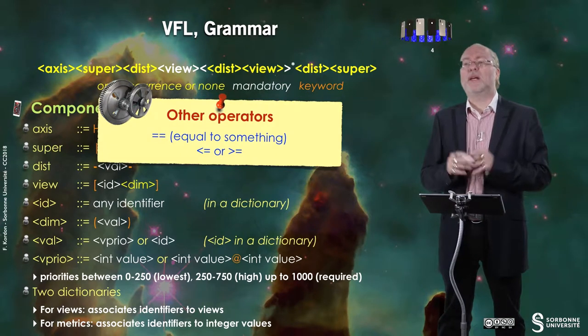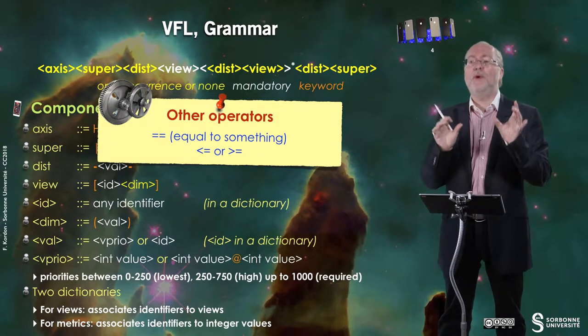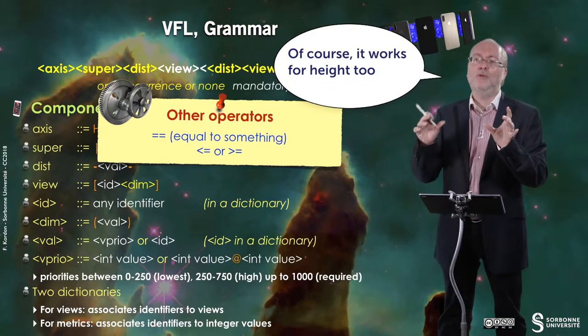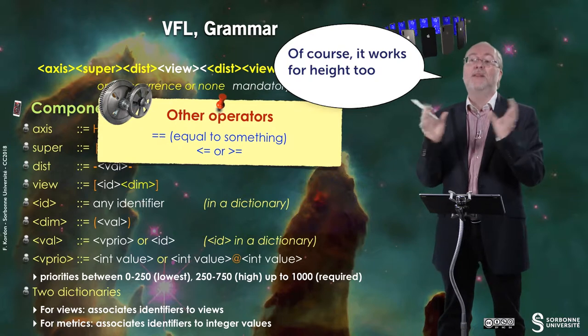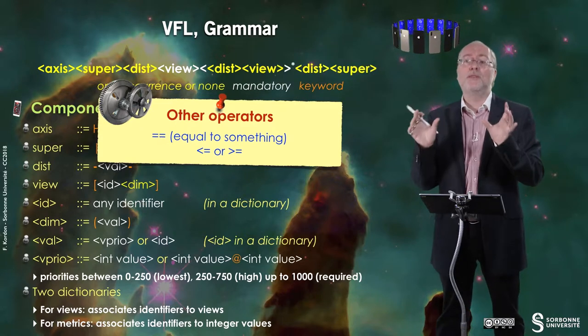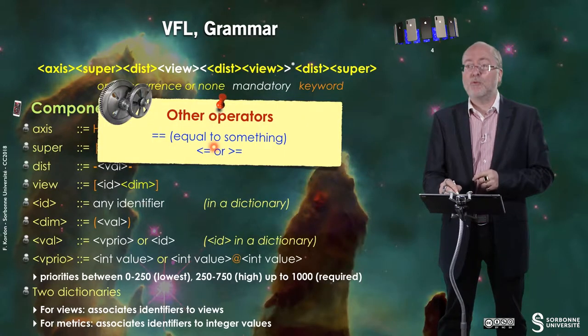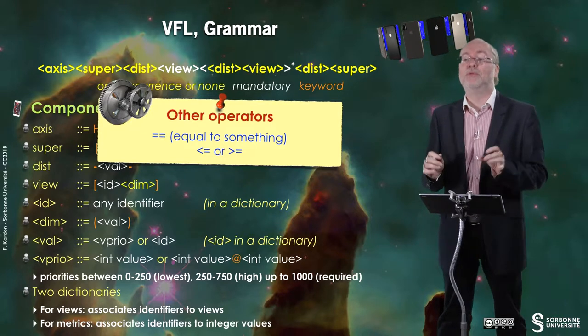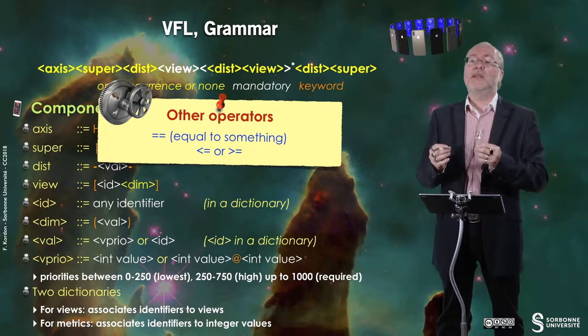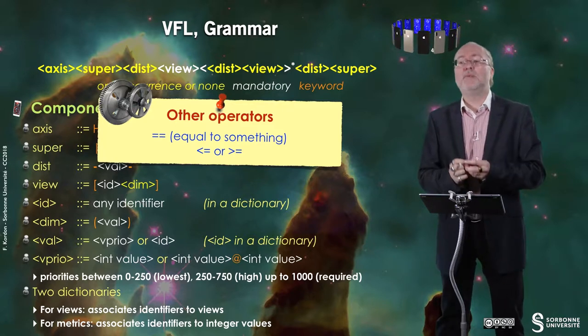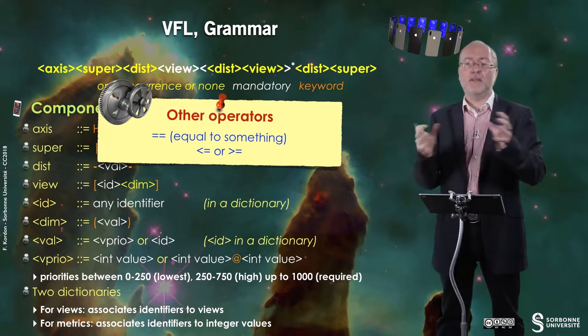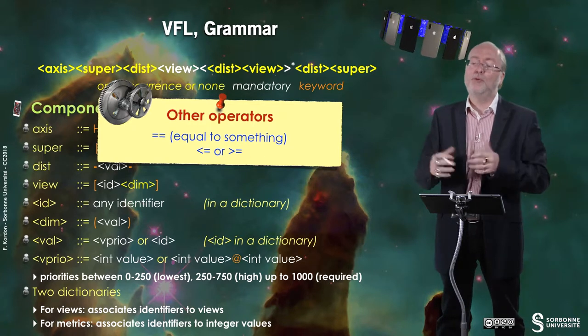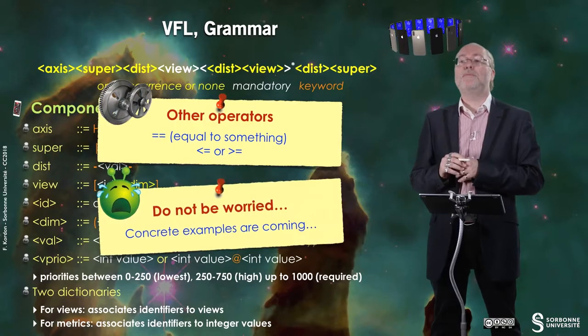There are other useful operators. Equal-equal means you can set the width of a given view equal to the width of another view, and the system will automatically compute the final width based on device size. You can also set less-than-or-equal or greater-than-or-equal to a given value, meaning you can specify minimum or maximum distances. The system then computes layouts according to these instructions. Concrete examples are coming very soon.